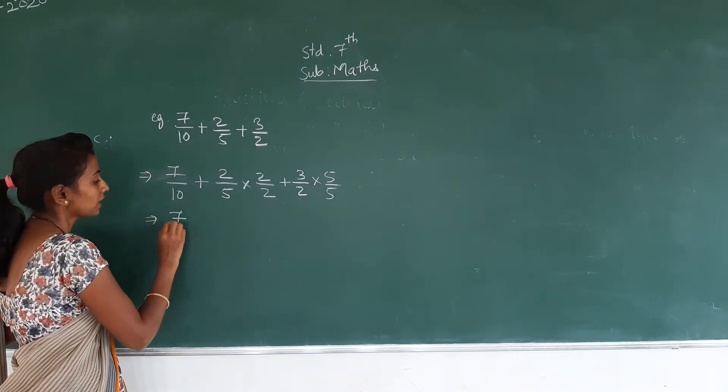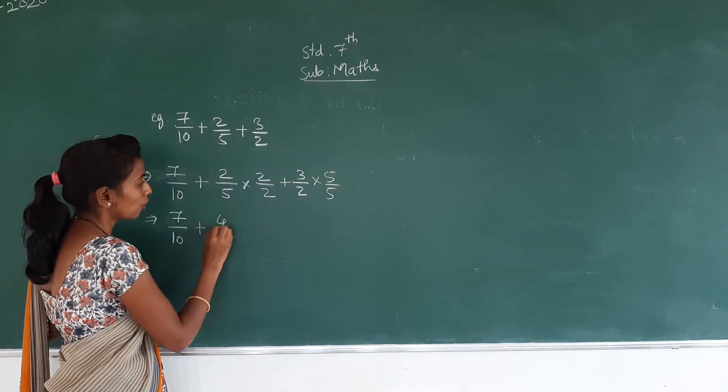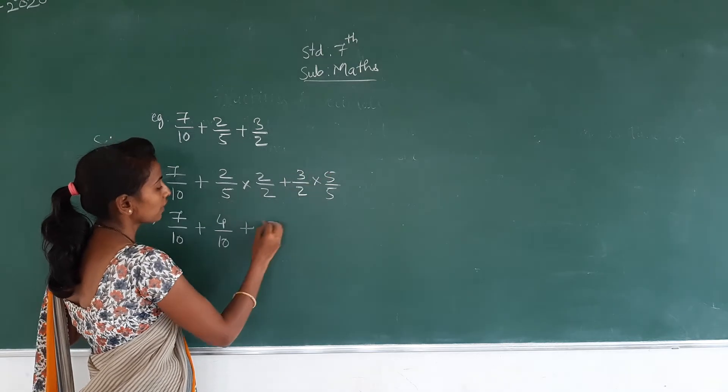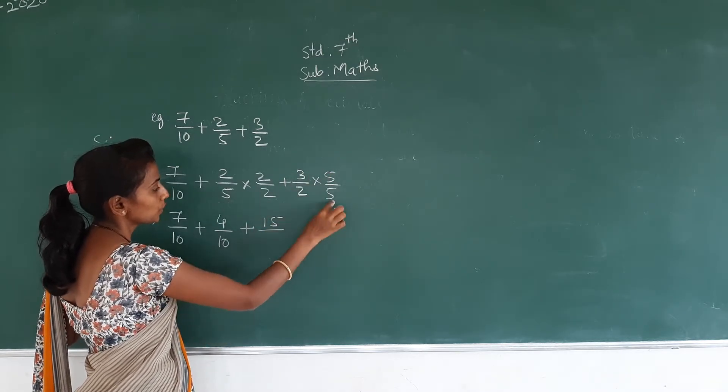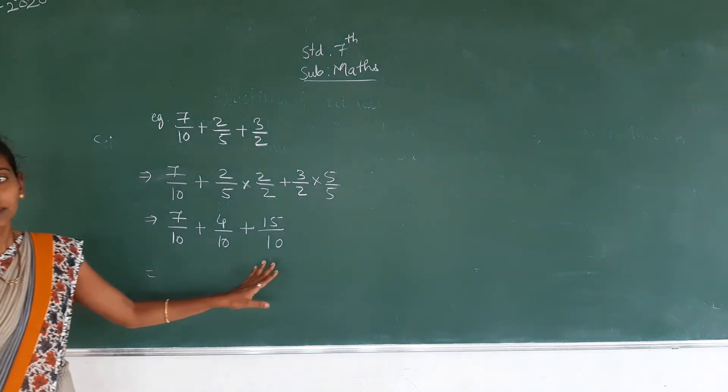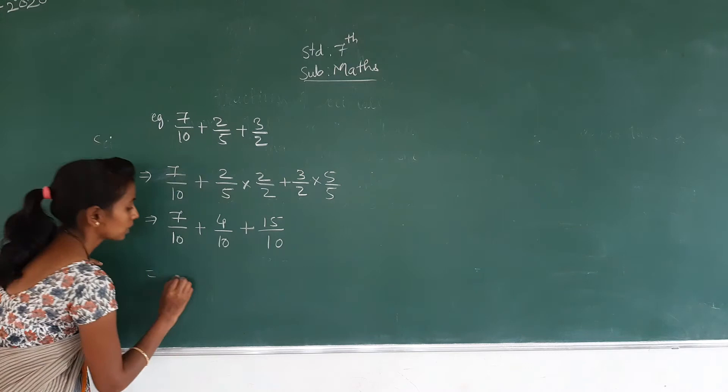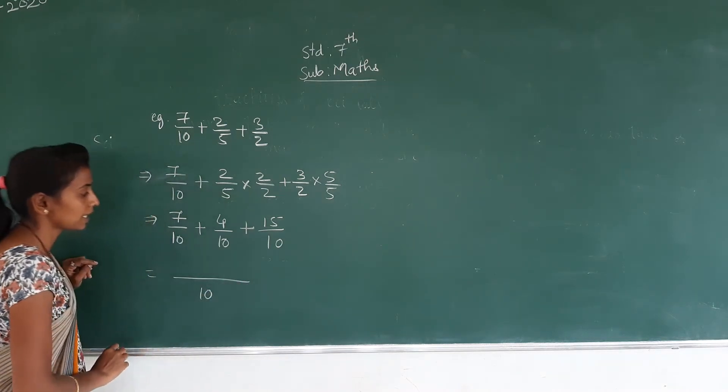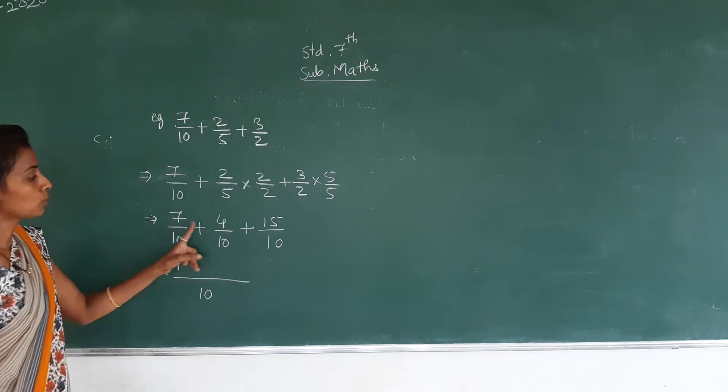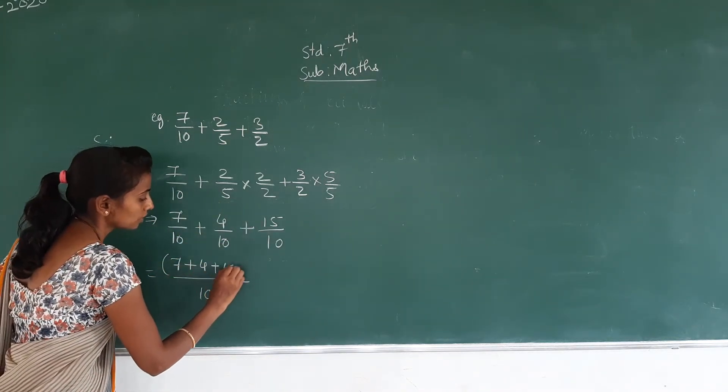7/10 here plus 2 becomes 4, 5 becomes 10, plus 3 becomes 15, 2 becomes 10. See here all the denominators come as 10. So the denominator is 10. Now we have to add the numerators: 7 + 4 + 15.